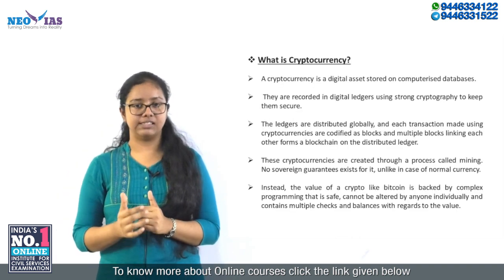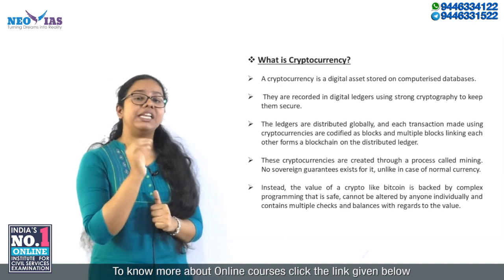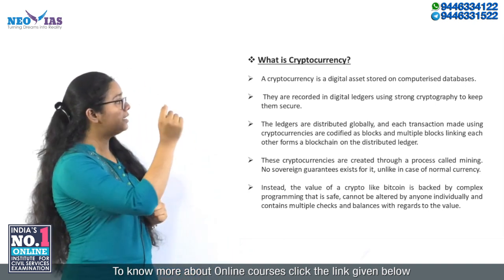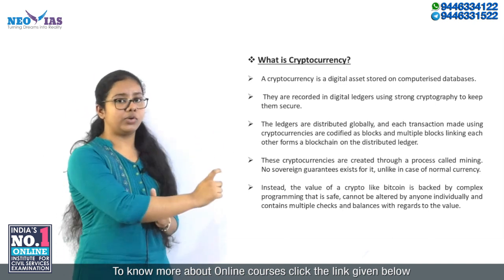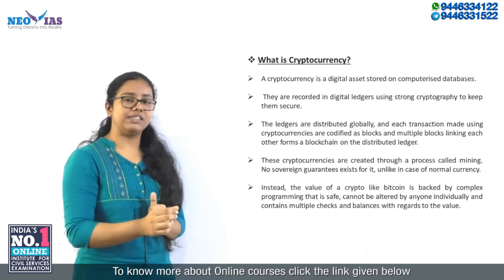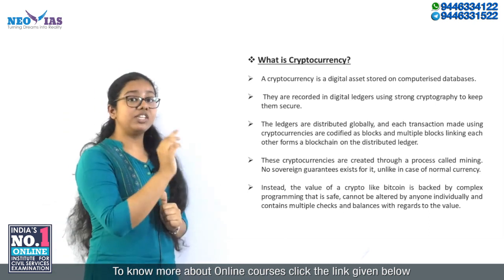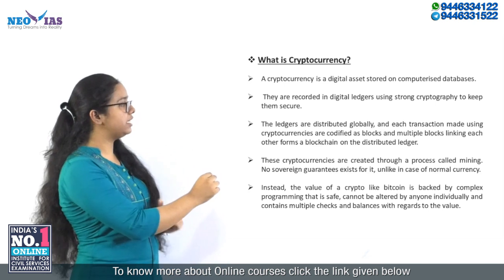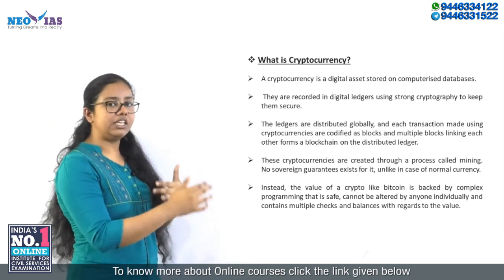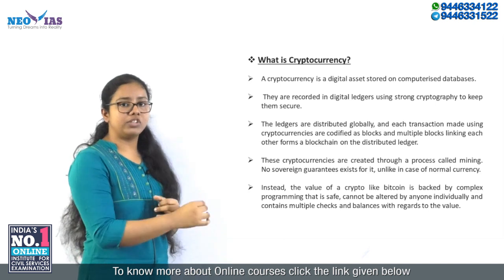Now let's see what a cryptocurrency is. A cryptocurrency is a digital asset that is stored in computerized databases and recorded in digital ledgers. A ledger is a book of accounts in which all the transactions are marked. It is recorded in a digital ledger using strong cryptography so as to ensure security, and the ledgers are distributed globally. Each transaction is codified as a block within these ledgers, and multiple such blocks link to each other forming the blockchain or distributed ledger. These cryptocurrencies are created by a process called mining.